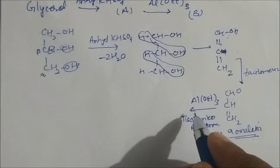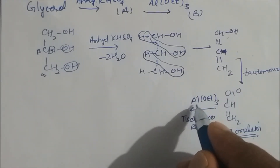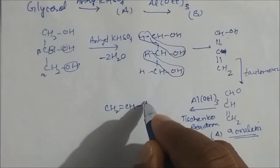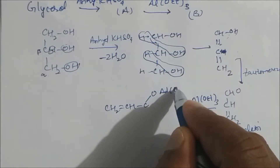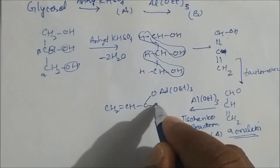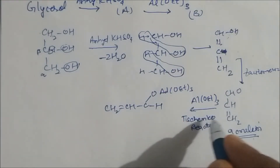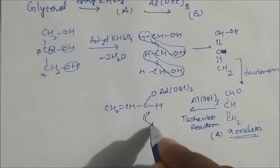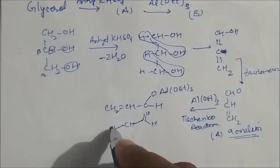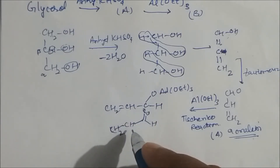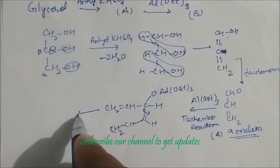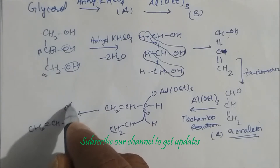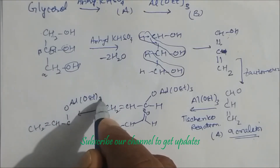Let us see how the ester is formed. Aluminium, acting as a Lewis acid, reacts on the oxygen of acrolein. We write CH₂=CH−C=O, and aluminium reacts on this oxygen: Al(OEt)₃. We take two molecules of acrolein. The second molecule, again polarized at the carbonyl carbon (CH₂=CH−C=O), attacks the electrophilic carbon.